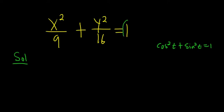So here you see that the left-hand side has to end up being 1. Via observation, you can let x equal 3 cosine t, and y equal 4 sine t.